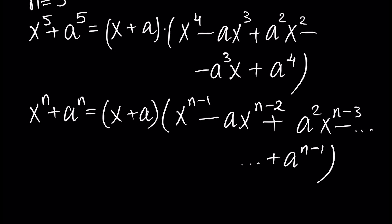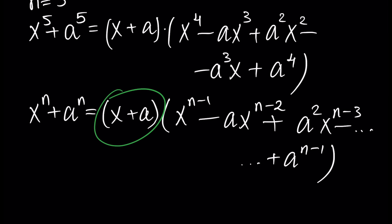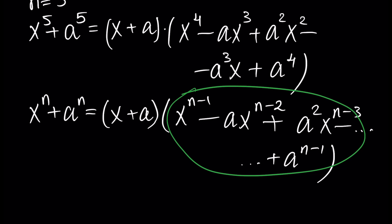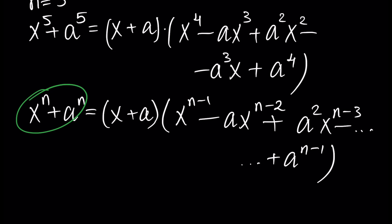This is the general formula for the representation of x^n plus a^n. Since it is divisible by x plus a, we have the representation as x plus a times another polynomial of degree n minus 1, found after division. These formulas are very important, and you have to watch these tutorials to use them when solving algebraic equations and other algebraic problems. Thank you very much for your attention — like and subscribe.